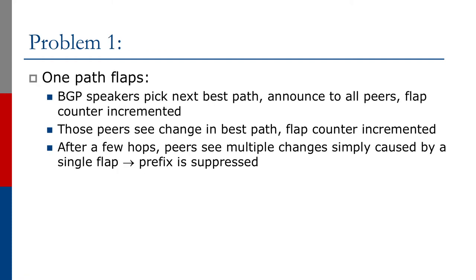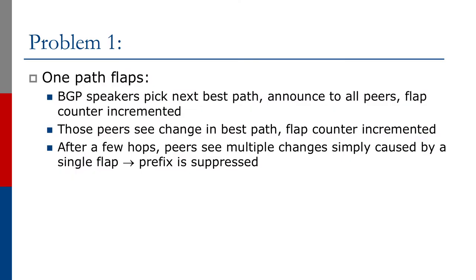One problem is this: when a path flaps, BGP speakers pick the next best path and announce it to all peers, incrementing the flap counter because the path has changed. A change in an attribute attracts a penalty of 500, and many operators weren't aware that an attribute change contributed to the flap counter. Because of that, peers see a change in best path, their flap counter is incremented, and after a few hops, peers see multiple changes caused by a single flap, and the prefix a few hops away ends up being suppressed.